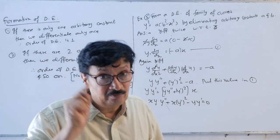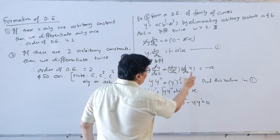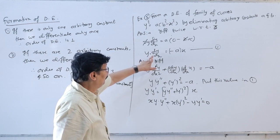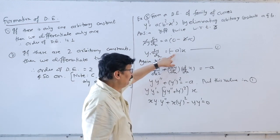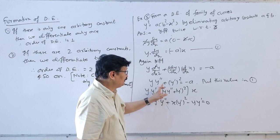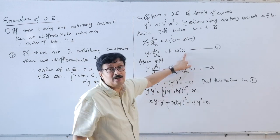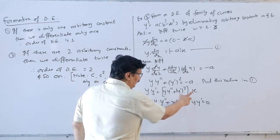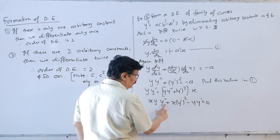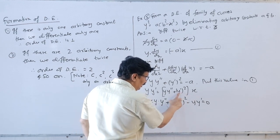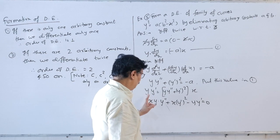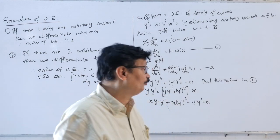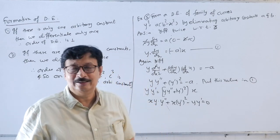Substituting the value of −A from equation 1 into the differentiated result: the left-hand side becomes y·y' multiplied by [y·y'' + (y')²], and with x multiplied through, we get x·y·y'' + x·(y')² + y·y' = 0. This is the required differential equation of order 2, containing d²y/dx².